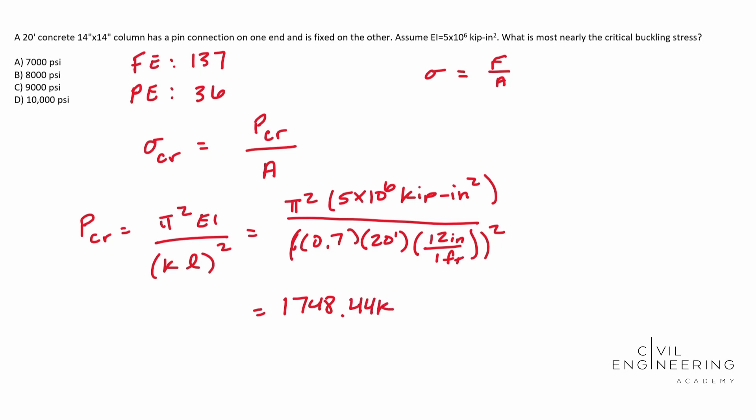So whenever you are calculating your stress, you end up with 1748.44 kips over your area, which is 14 inches by 14 inches. That's your cross-sectional area of your column. When you plug that in, you end up with 8.921 kips per inch squared.